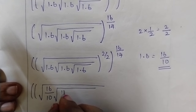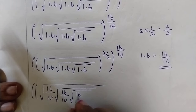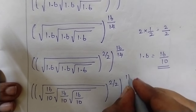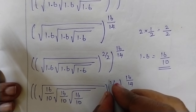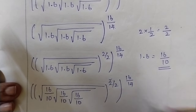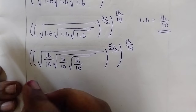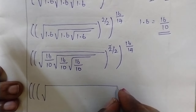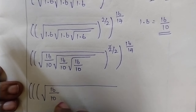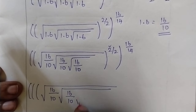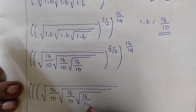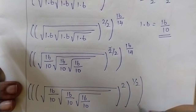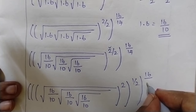So the root of 16 by 10, to make the calculation simpler — 2 by 2 into 16 by 14. Now we are going to take this 2 alone and this 1 by 2 alone, then create 3 brackets: inside 16 by 10, root 16 by 10, root 16 by 10, to the power square of 1 by 2, of 16 by 14.